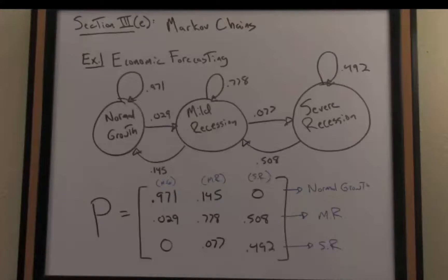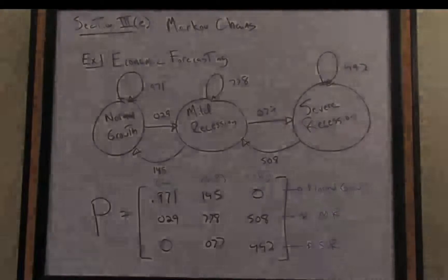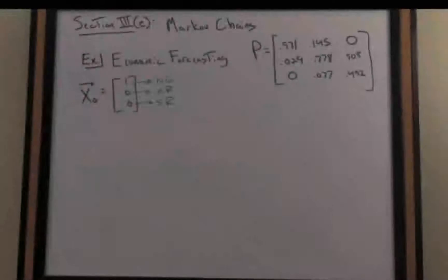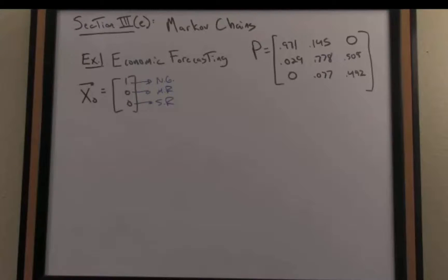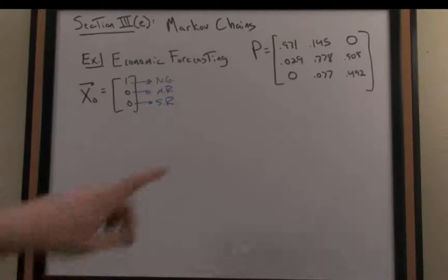Now that we have our stochastic matrix for this particular economic model let's go ahead and use it in the context of a Markov chain to then make some predictions. So let's calculate a Markov chain for this example of economic forecasting, again recalling that here is our stochastic matrix P representing the various transitional probabilities.